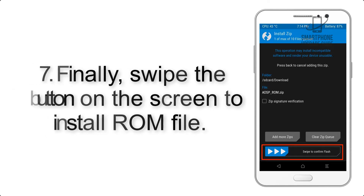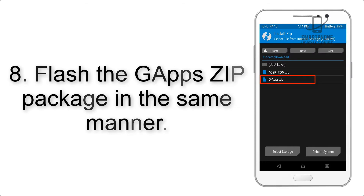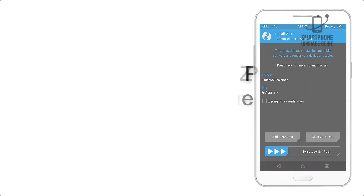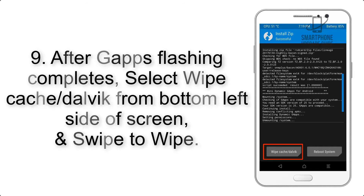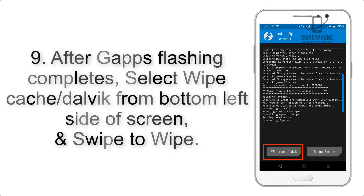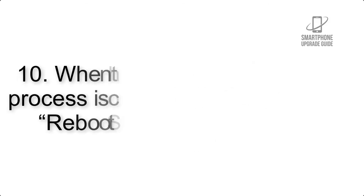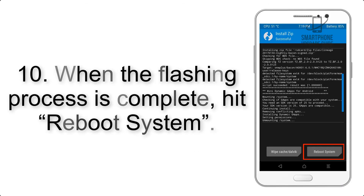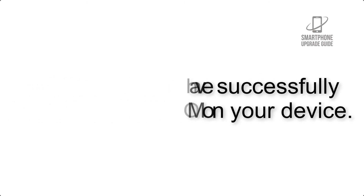Step 8: Flash the gapps zip package in the same manner. Step 9: After gapps flashing completes, select Wipe Cache and Dalvik from the bottom left side of the screen and swipe to wipe. Step 10: When the flashing process is complete, hit Reboot System. That's it — you have successfully installed the ROM on your device.